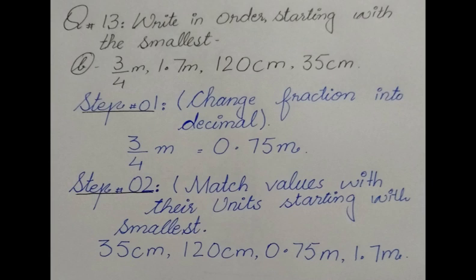Question 13: Write in order starting with the smallest - 3m, 1.7m, 120cm, 35cm. We have one value in fraction and one in decimal, so what do we do first? We will solve these two.